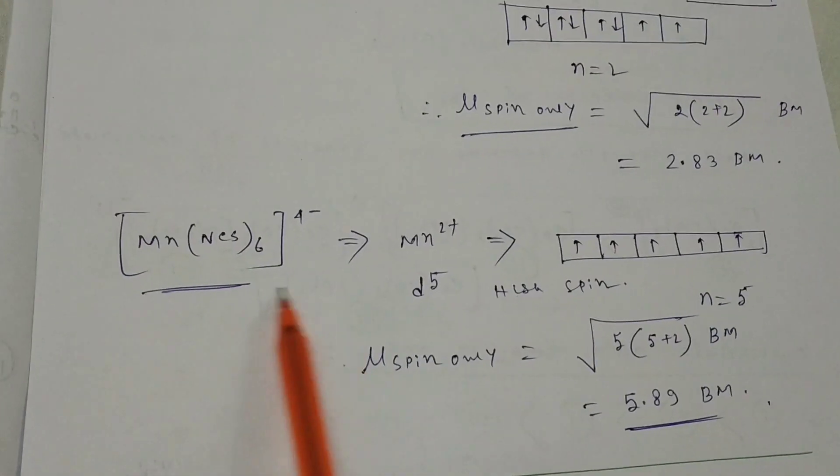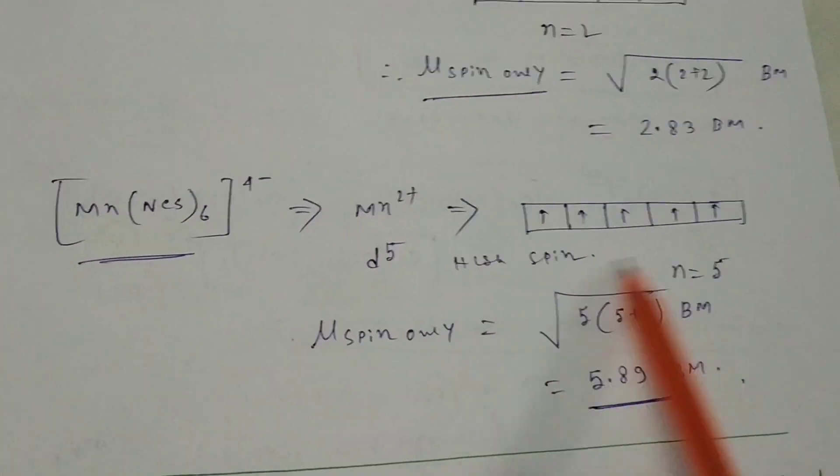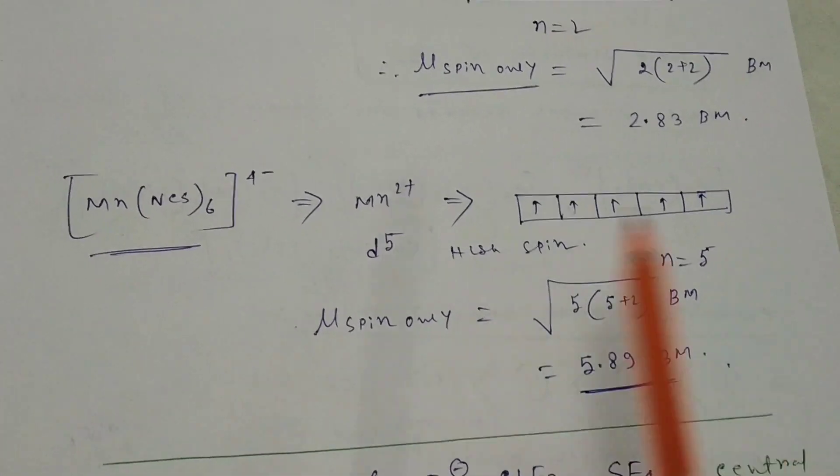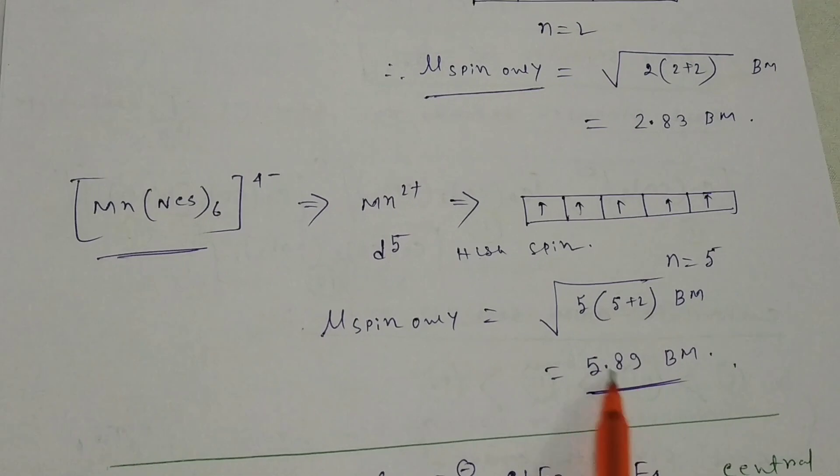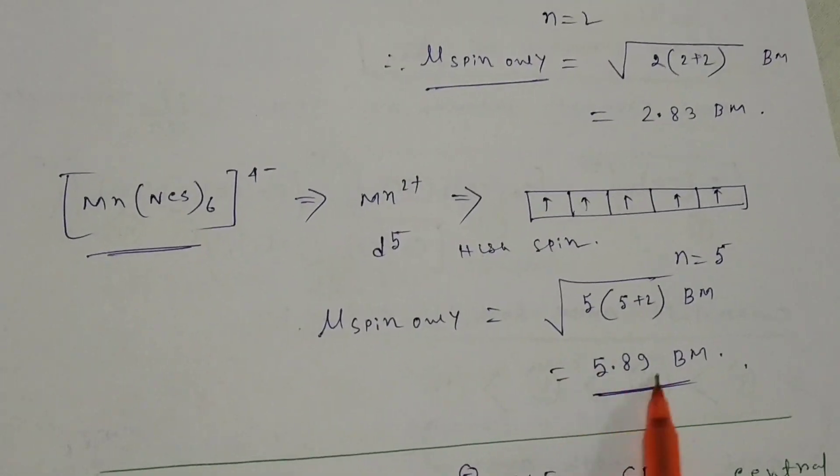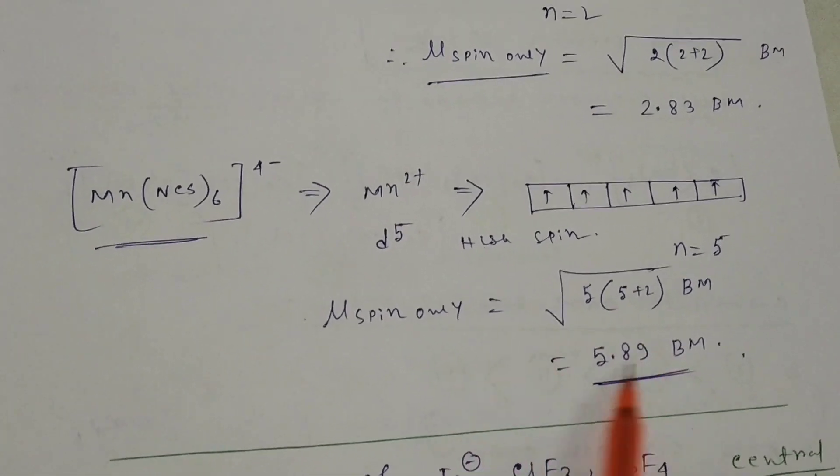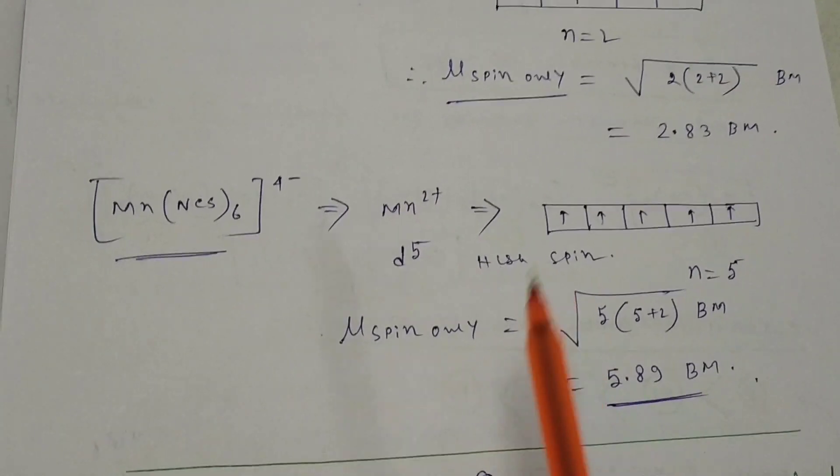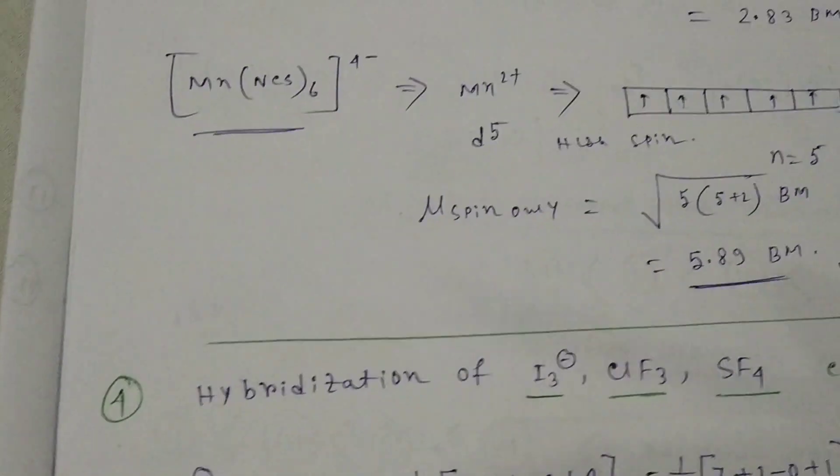Similarly for Mn(NCS)6^4-, this is Mn2+ with five unpaired electrons present. So this will be 5.89 Bohr magneton, but in observed value it's around 6.06 Bohr magneton. So the answer will be around 6 or 5.89 here.